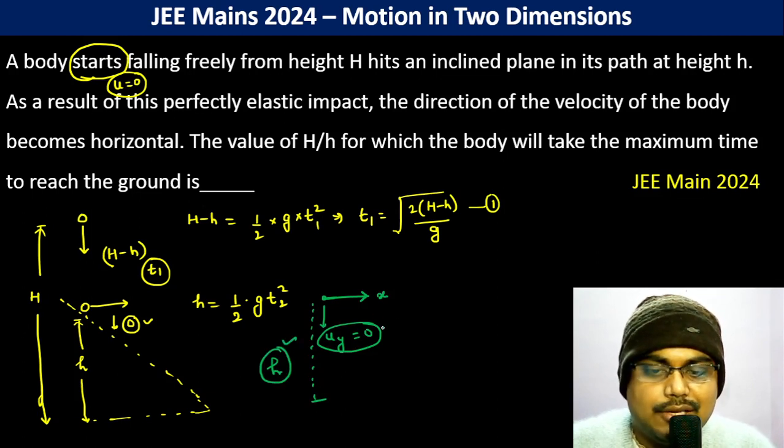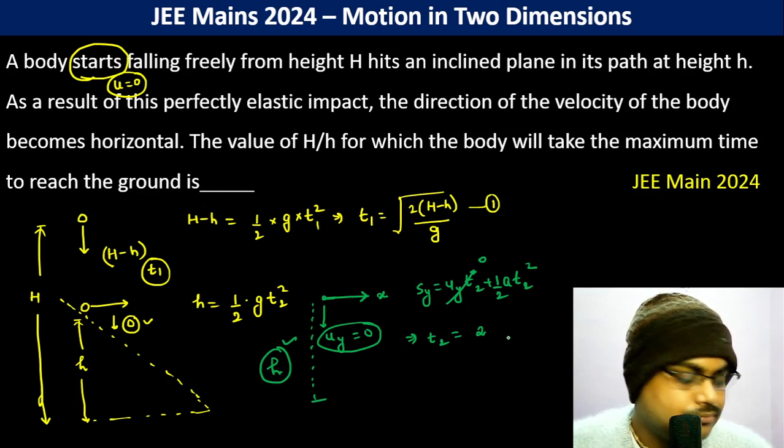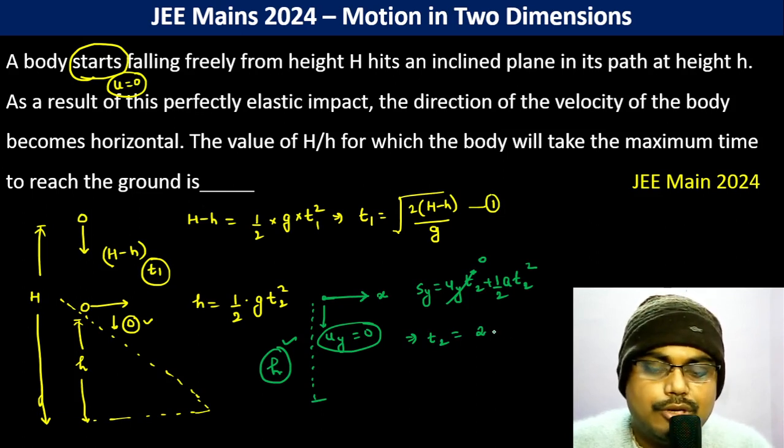We can put like this: s_y equals u_y times t2 plus half into a t2 square. Initial velocity in y direction is 0, so t2 equals root over 2 times s_y divided by a which is g.